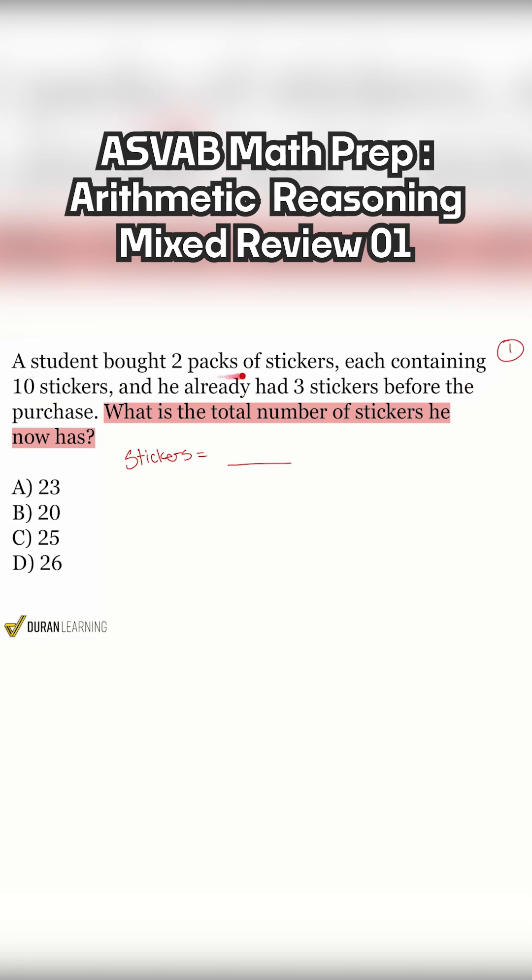A student bought two packs of stickers, each containing 10 stickers, and he already had three stickers before the purchase. So to me, what that says is, hey, we have two packs of stickers and we highlight that in blue, two packs of stickers. So we have one pack here, one pack there.